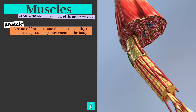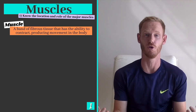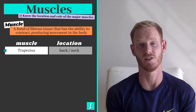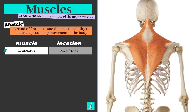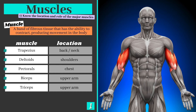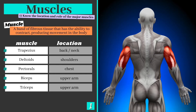Muscle is simply a band of fibrous tissue that has the ability to contract or produce force, creating movement in the body. There are 13 muscles that you need to be able to locate. The first is the trapezius, found at the upper portion of the back and neck. The deltoids are the shoulder muscles which cover the front, top and backside of the ball and socket joint. The pectorals are your chest muscles, while the biceps and triceps are located on the front and back of your upper arm respectively.